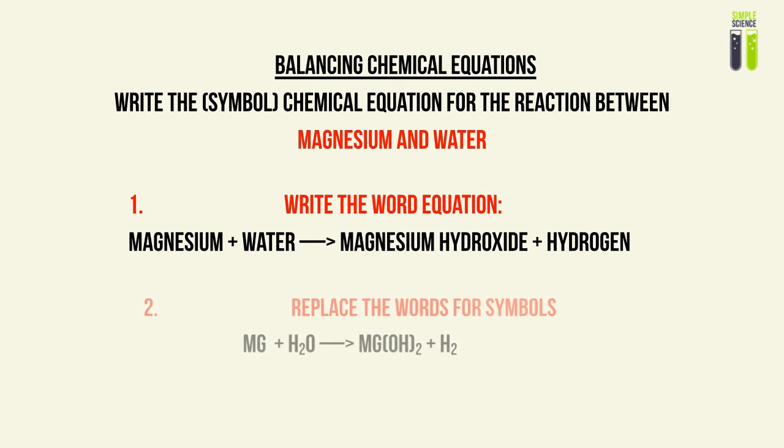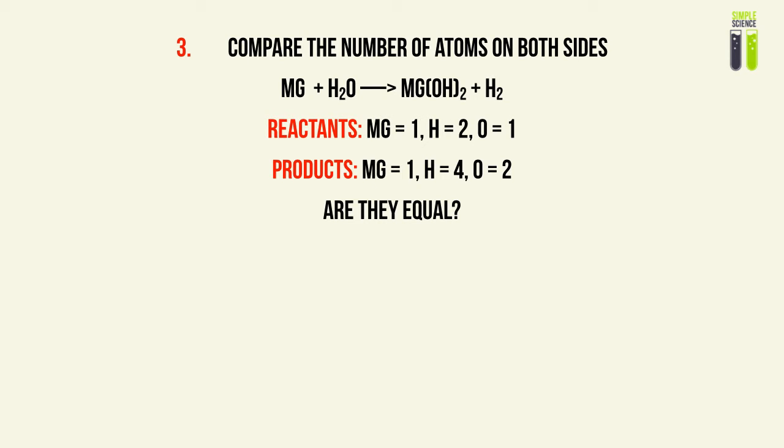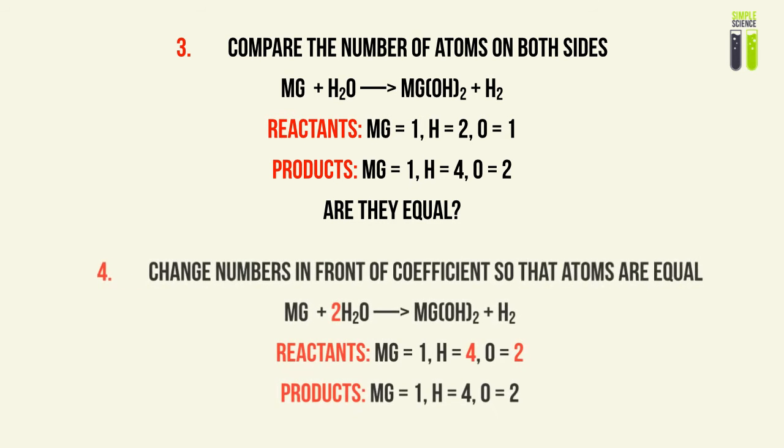The second step is to replace the words with symbols — but don't balance anything yet, just substitute symbols for words. As you can see, this equation is not balanced. So you then need to form a table — either written down or in your mind — and check whether the number of atoms on each side are equal. This becomes a trial and error process where you play around with the numbers in front of the atoms, i.e. the coefficients.